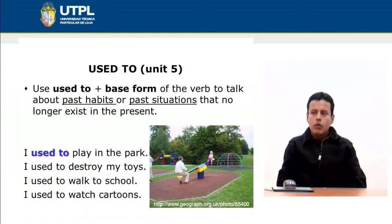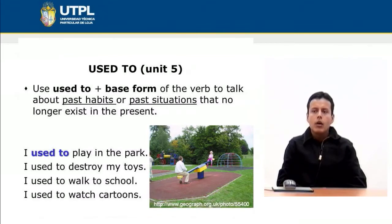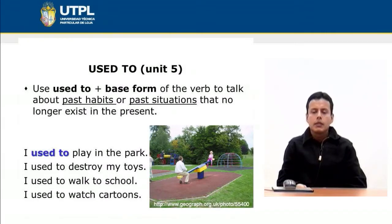I'm going to explain something in Spanish. Utilizamos 'used to' más la forma base del verbo para hablar sobre acciones que sucedieron en el pasado pero ya no suceden actualmente. Si digo 'I used to play in the park,' quiero decir 'solía jugar en el parque.' Es decir, una acción que se realizaba en el pasado — jugaba en el parque — pero ya no se realiza ahora.